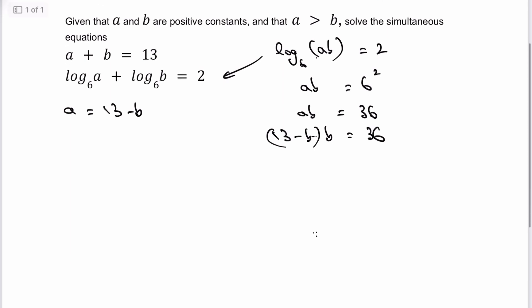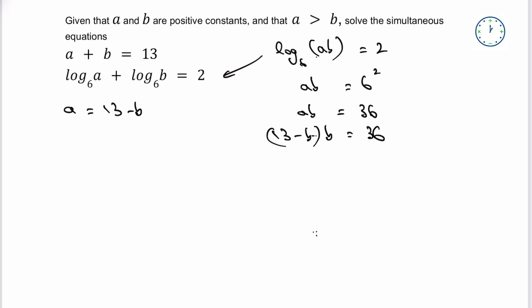Now, when I expand this out, I should be in a position where I can solve it. So let's have a look at what I've got. Well, I'm going to get 13b minus b squared equals 36.